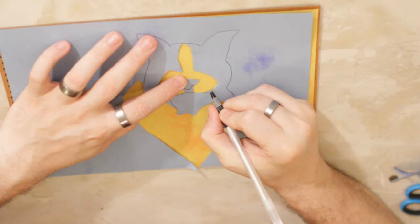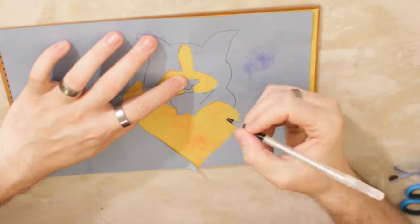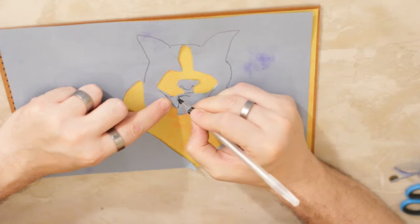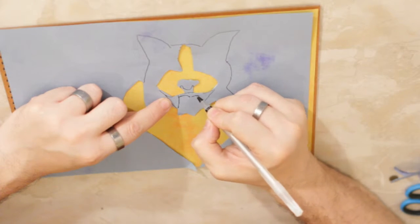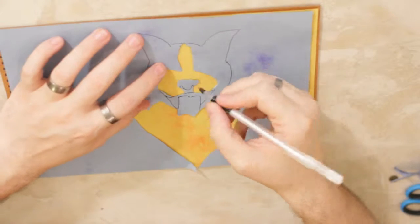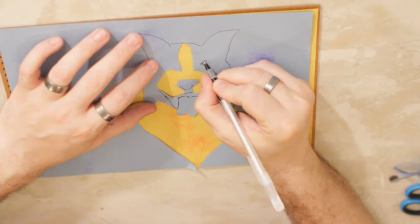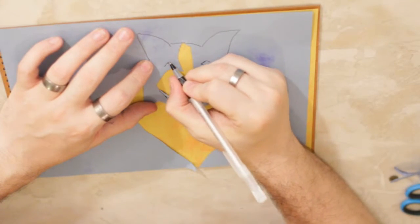Now again, if you want you can come back in here with the red and put the tongue in. And if you want you can cut the eyes out. There you go, there is your border collie.